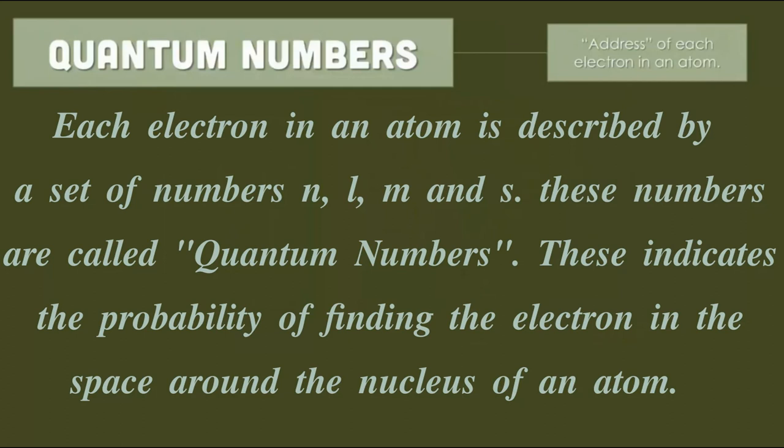They represent the address of each electron in an atom. Each electron in an atom is described by a set of numbers n, l, m, and s. These numbers are called quantum numbers. These indicate the probability of finding the electron in the space around the nucleus of an atom.